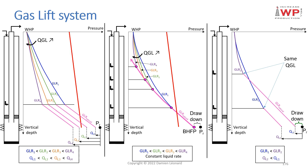To summarize: at constant depth of injection, the higher the gas lift rate, the higher the liquid rate — provided you are not over-injecting. At a constant liquid rate, the deeper you inject the gas lift, the less amount you need to inject. And at a constant gas lift rate, the deeper you inject your gas lift, the higher the liquid rate will be.